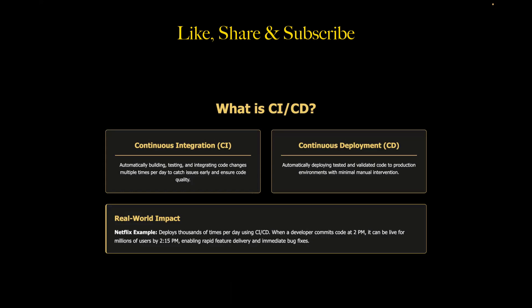Here's a real example. Companies like Netflix or Amazon deploy multiple times per day. When a developer pushes code at 2pm, it can be live for millions of users at 2:15pm. But here's a key point for QA engineers: none of this is possible without rock-solid testing. That's where QA comes into the picture. We are not just finding bugs anymore — we are the guardians of the entire deployment pipeline.